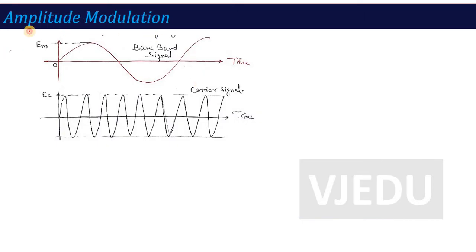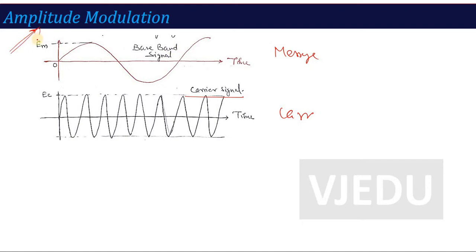Amplitude Modulation, as the name defines — I told you in the last lecture about the modulation process. There are two things: the message signal and the carrier signal. Modulation means the carrier signal's property changes according to the message signal. In amplitude modulation, the carrier signal's amplitude is modulated with respect to the message signal.